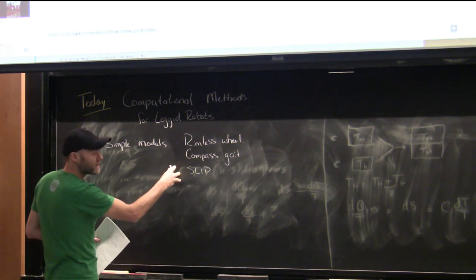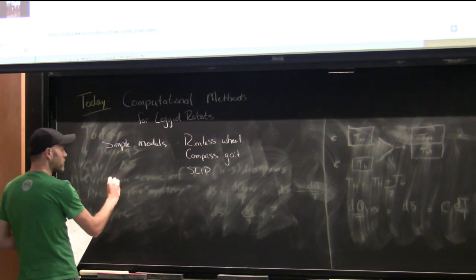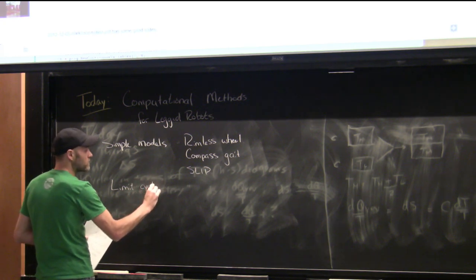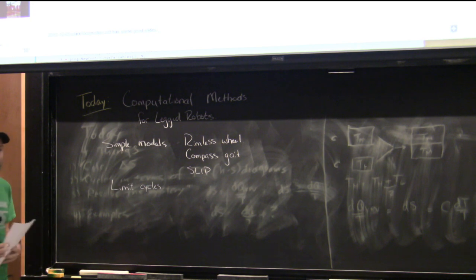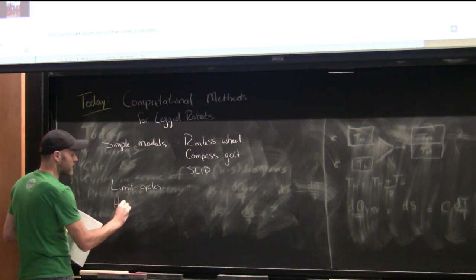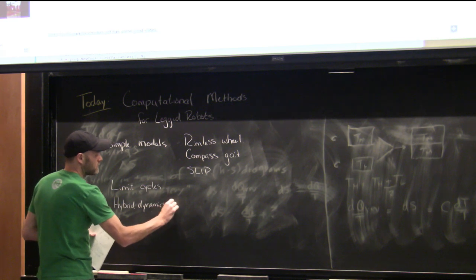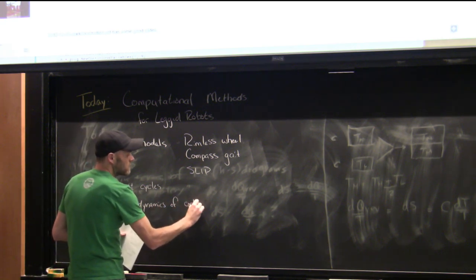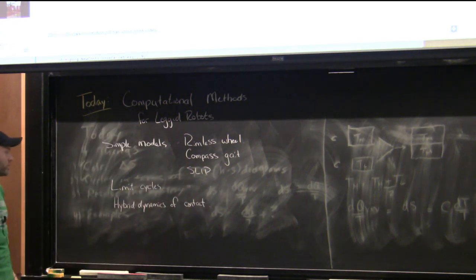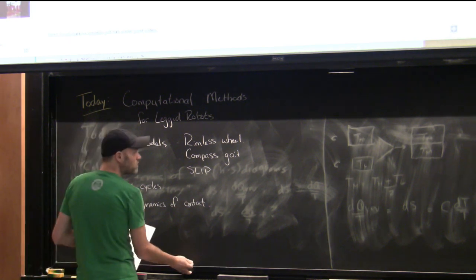We developed a couple of ideas in terms of analysis for these. One was the idea of understanding stability in terms of a periodic solution that was stable — a limit cycle — instead of a fixed point or a trajectory. And the other thing we had to start dealing with was the hybrid dynamics of contact, meaning that there's both continuous dynamics and some discrete event of when you hit the ground.